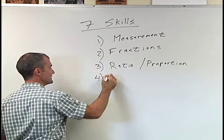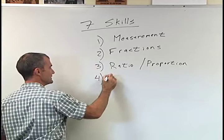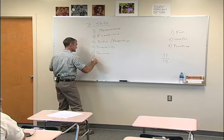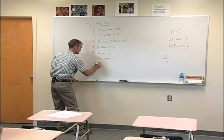The fourth is probability. The fifth is decimals, percents, and then the seventh is geometry.